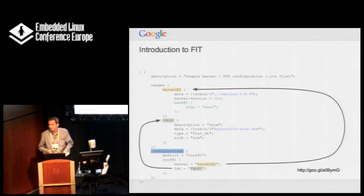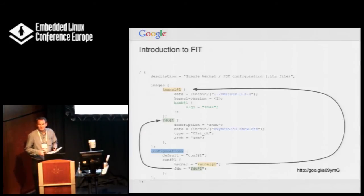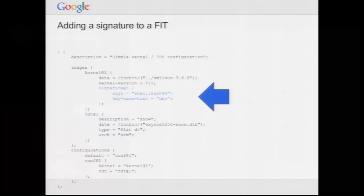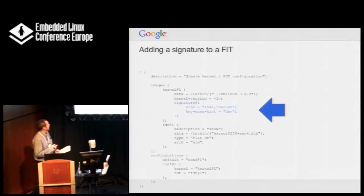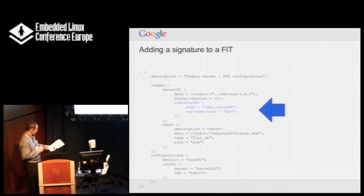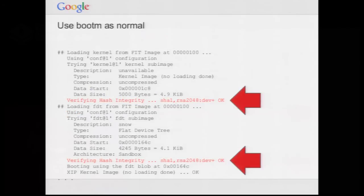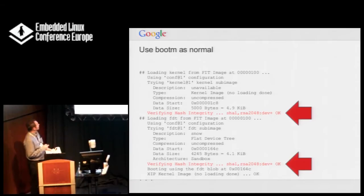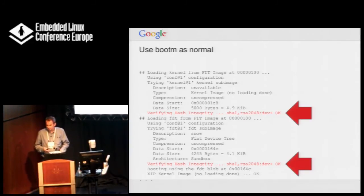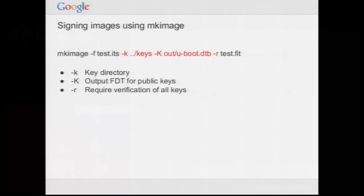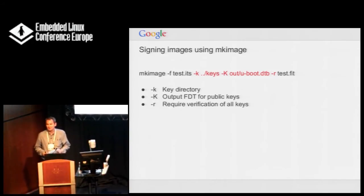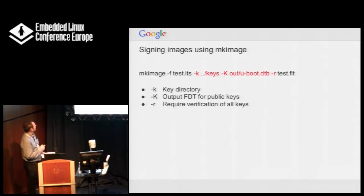Having decided we're going to use FIT, how do we add a signature to it? We just replace the hash with a signature node. Here's the signature algorithm we want to use. When you run bootm to boot the thing, it boots as normal — you'll notice these new lines where it says we're verifying hash integrity with SHA-1 RSA 2048. You get these extra lines in the output, but otherwise bootm works as before. To sign an image we use mkimage, telling it the key directory and some other things.